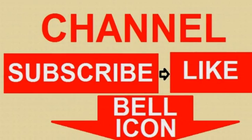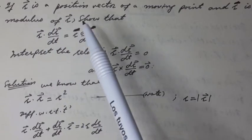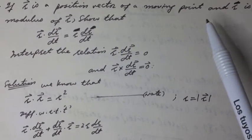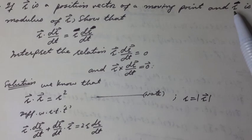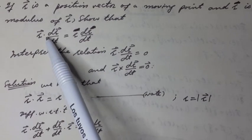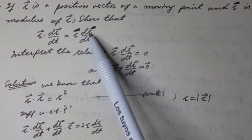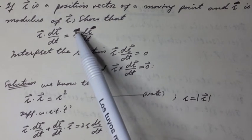If R vector is a position vector of a moving point and R without arrow sign is modulus of R vector, show that R vector dot dR vector over dt equal to R dR over dt without arrow signs.